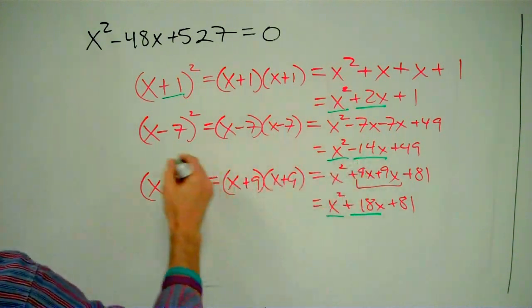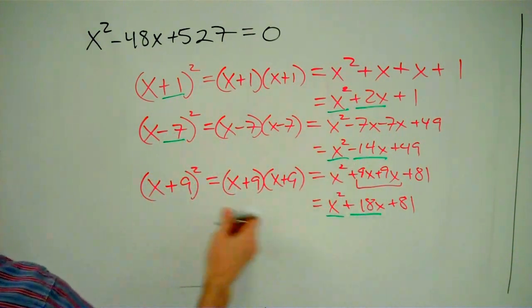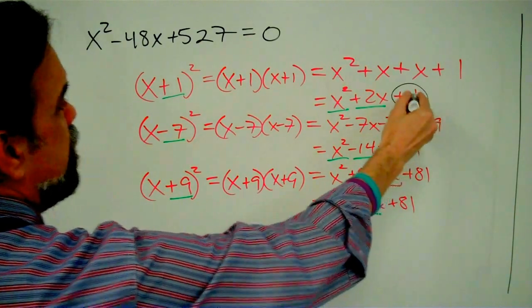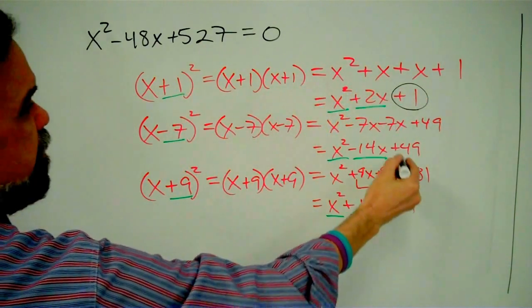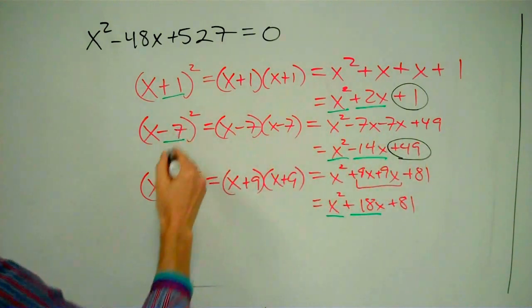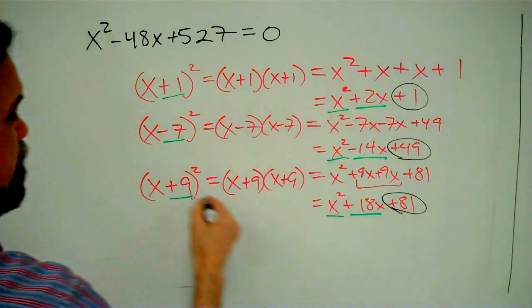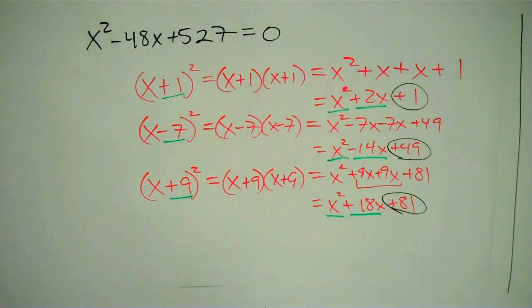And the last number that we have, this 1, this is merely 1². This 49 is merely 7 or -7 squared. And this 81 is merely 9².